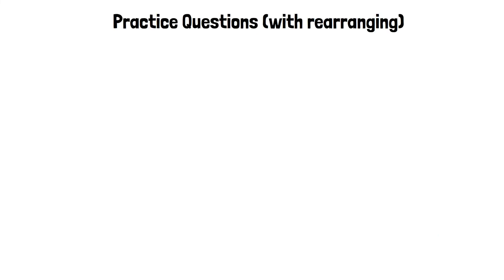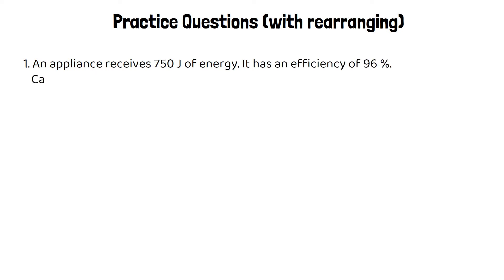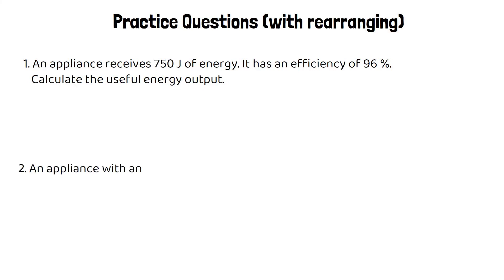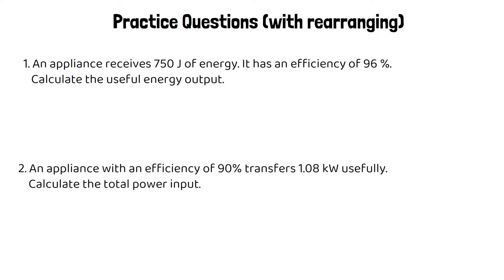Here are some practice questions where you work out something other than efficiency. An appliance receives 750 joules and has an efficiency of 96% — calculate the useful energy output. A second appliance has an efficiency of 90% and transfers 1.08 kilowatts usefully — calculate the total power input. Pause the video and give these a go.